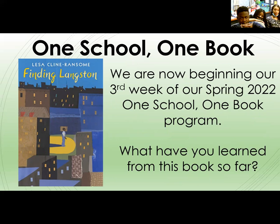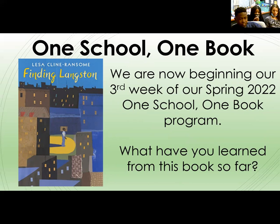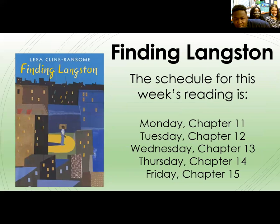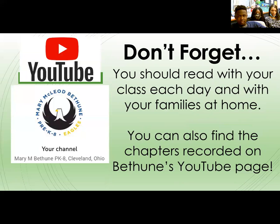One School One Book: We are now beginning our third week of our Spring 2022 One School One Book program. So far I've learned about the struggles that the main character and his father had to go through after his mom died, and how he reacted to moving to different cities — and I learned that we get Jolly Ranchers every time we answer a question right! This week's reading schedule: Monday Chapter 11, Tuesday Chapter 12, Wednesday Chapter 13, Thursday Chapter 14, Friday Chapter 15. You should read with your class each day and with your families at home — you can also find the chapters recorded on Bethune's YouTube page.